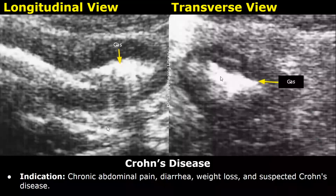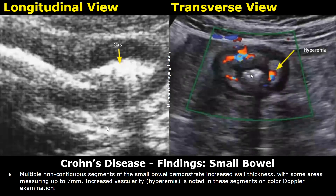Here is a report of Crohn's disease. Indication: chronic abdominal pain, diarrhea, weight loss, and suspected Crohn's disease. Findings: multiple non-contiguous segments of the small bowel demonstrate increased wall thickness, with some areas measuring up to 7 millimeters. Increased vascularity and hyperemia is noted in these segments on color Doppler examination.